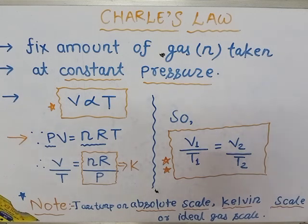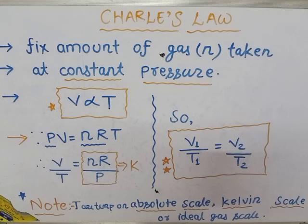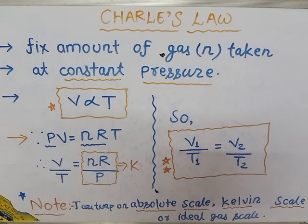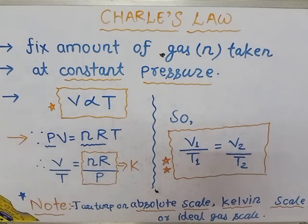Fixed amount of gas means the number of moles n is fixed, and constant pressure means the pressure exerted by the gas remains constant. According to Charles law, volume is directly proportional to temperature at constant pressure. We know that an ideal gas follows the ideal gas equation under all conditions of temperature and pressure.